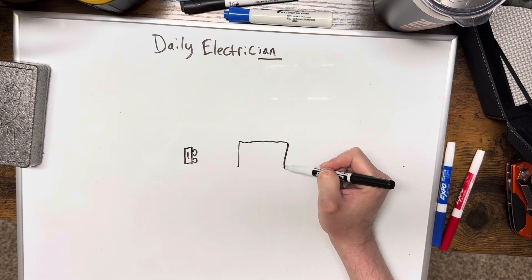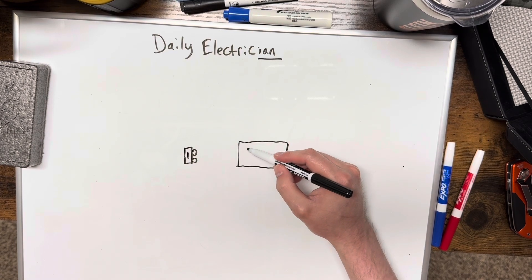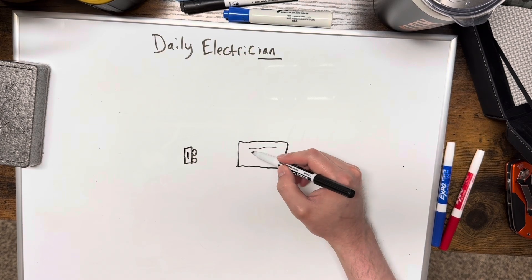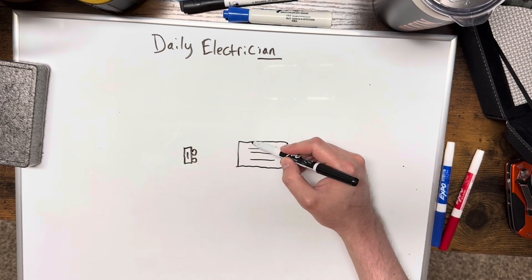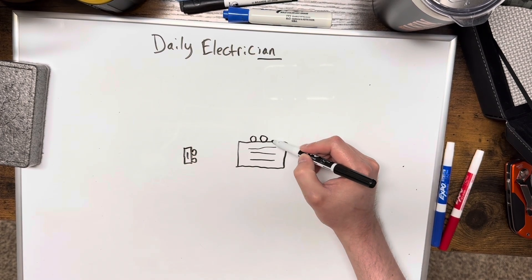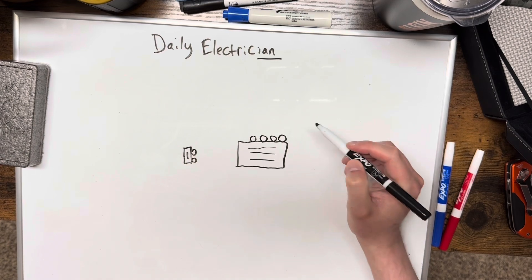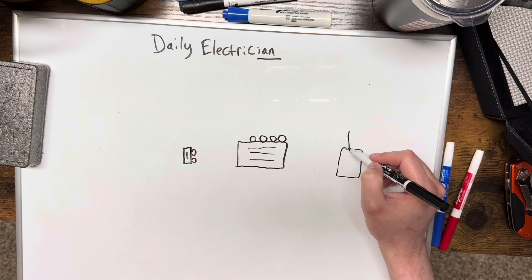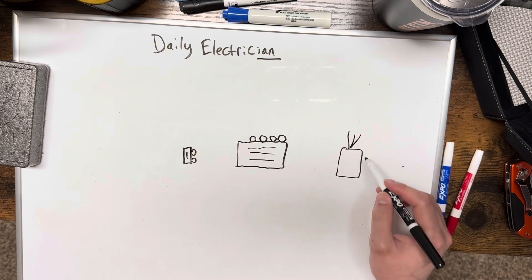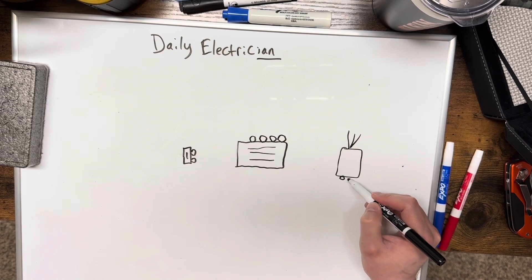So when you press the doorbell it makes a noise. I don't really know how to draw this, usually just has some little design on it and that's going to have three or four little connection points. And then you're going to have your doorbell transformer itself with the power connections and then the low voltage connections.